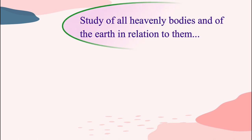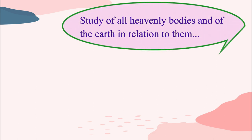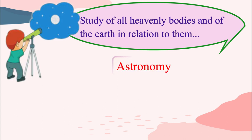Study of all heavenly bodies and of the earth in relation to them. Instead of saying this full sentence, we can simply say astronomy. Astronomy is the scientific study of celestial bodies such as stars, planets, comets, and galaxies. Astronomy is not the same as astrology. Astronomy is a branch of science exploring the world of stars, planets, and the cosmos, while astrology is based on assumptions that the planets in the solar system have an impact on our lives.